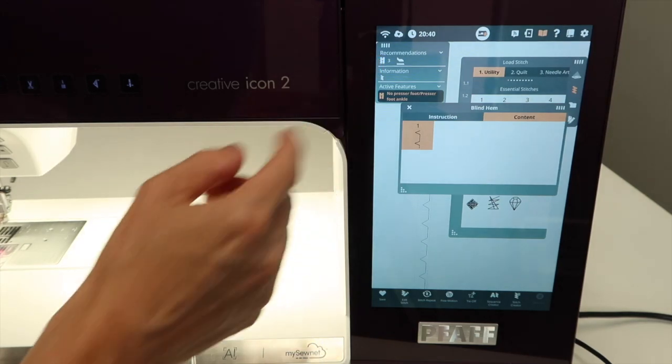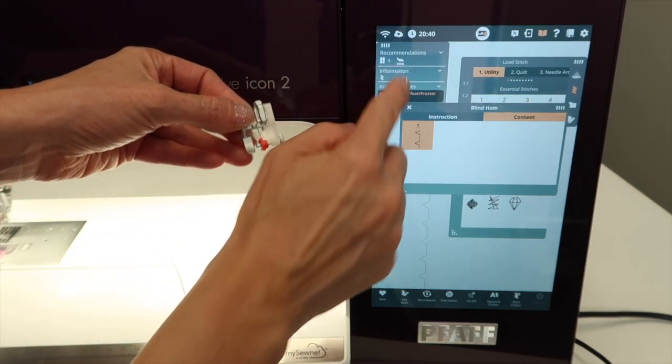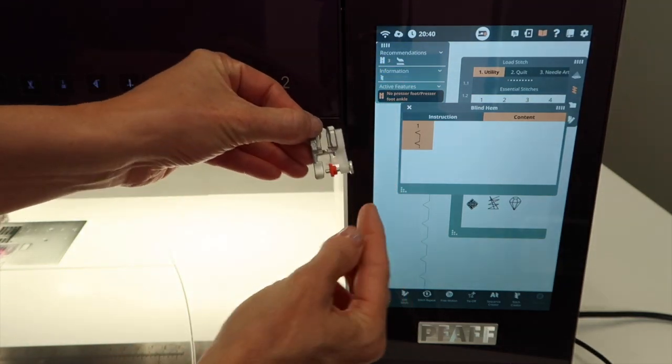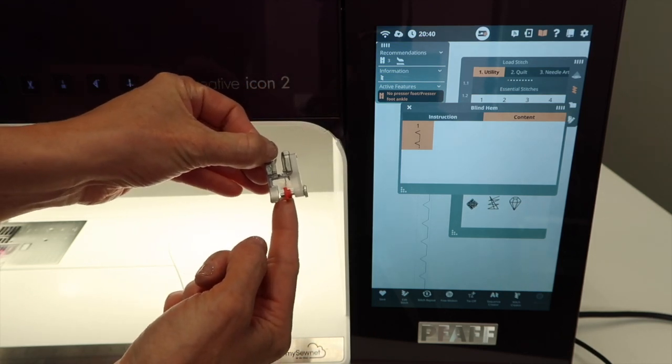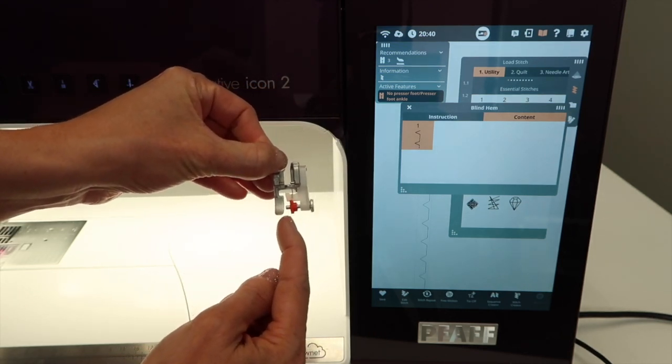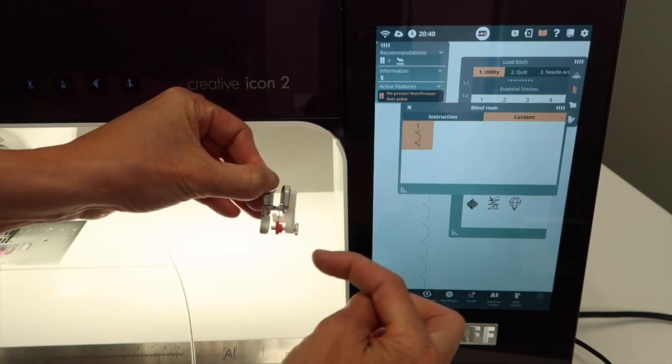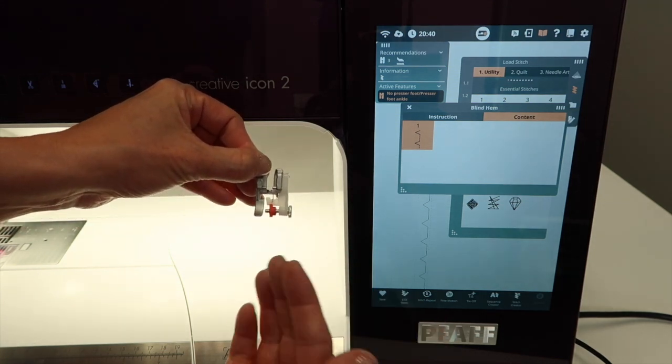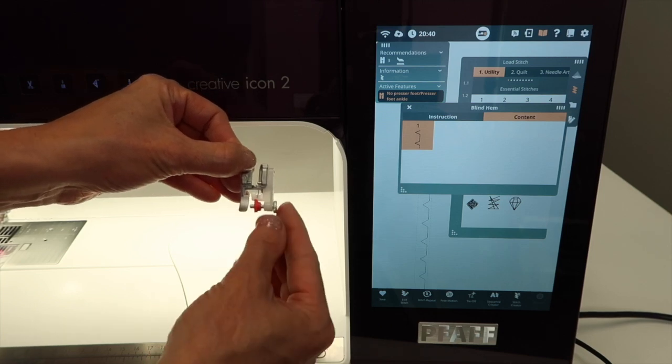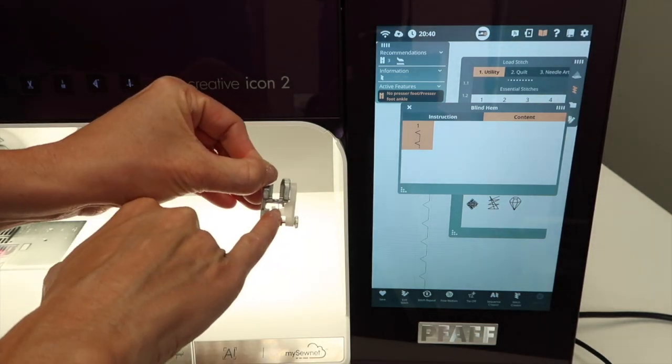It is recommending that we put on foot 3 and engage the dual feed. Foot 3 is a foot I use quite a bit, but this little red marker here is adjustable. Once I put this in, I'm going to be adjusting this based on the thickness of fabric that I'm stitching. I'm going to show you the little trick to that.